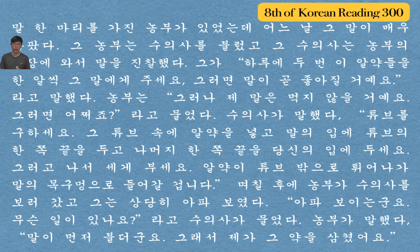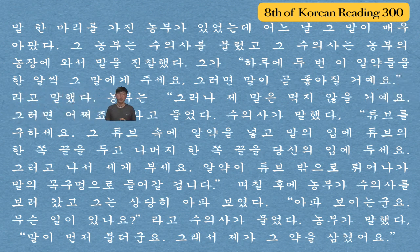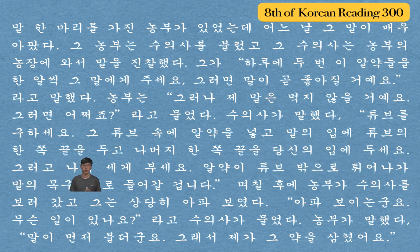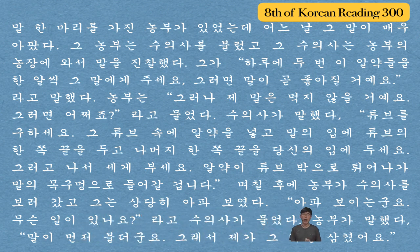Now let's go over the whole paragraph: 말 한 마리를 가진 농부가 있었는데 어느 날 그 말이 매우 아팠다. 그 농부는 수의사를 불렀고 그 수의사는 농부의 농장에 와서 말을 진찰했다. 그가 하루에 두 번 이 알약들을 한 알씩 그 말에게 주세요 그러면 말이 곧 좋아질 거예요 라고 말했다. 농부는 그러나 제 말은 먹지 않을 거예요 그러면 어쩌죠 라고 물었다. 수의사가 말했다 튜브를 구하세요 그 튜브 속에 알약을 넣고 말의 입에 튜브의 한쪽 끝을 두고 나머지 한쪽 끝을 당신의 입에 두세요 그러고 나서 세게 부세요 알약이 튜브 밖으로 튀어나가 말의 목구멍으로 들어갈 겁니다. 며칠 후에 농부가 수의사를 보러 갔고 그는 상당히 아파 보였다. 아파 보이는군요 무슨 일이 있나요 라고 수의사가 물었다. 농부가 말했다 말이 먼저 불더군요 그래서 제가 그 약을 삼켰어요.